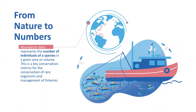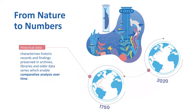Already from the beginning, OBIS also captured abundance data, which represents the number of individuals of a species in a given area or volume of seawater or sediment. This is a key metric for the conservation of species and the management of species populations like fish stocks, because the impact of environmental change will happen first at the abundance level and may not be detected immediately in species presence-absence data. We have 4 million records from before the 1970s, and a lot of our efforts have focused on digitizing historic records preserved in archives, libraries, and museum collections.